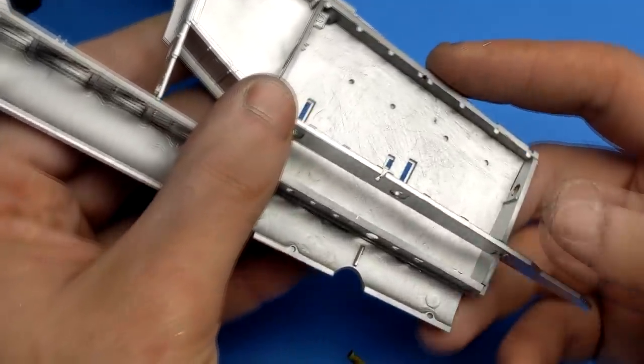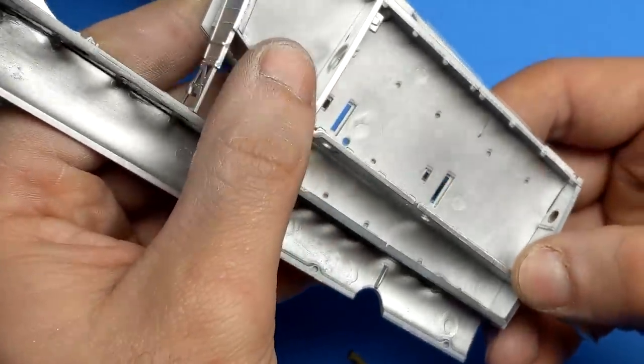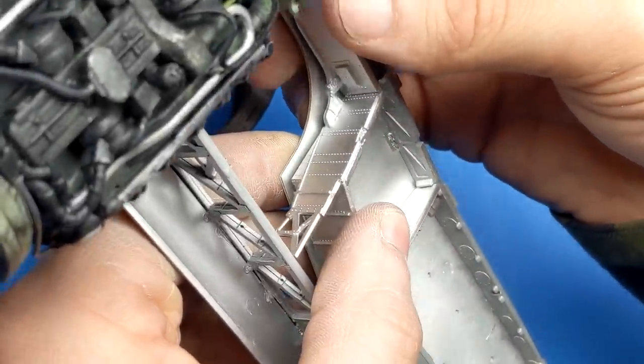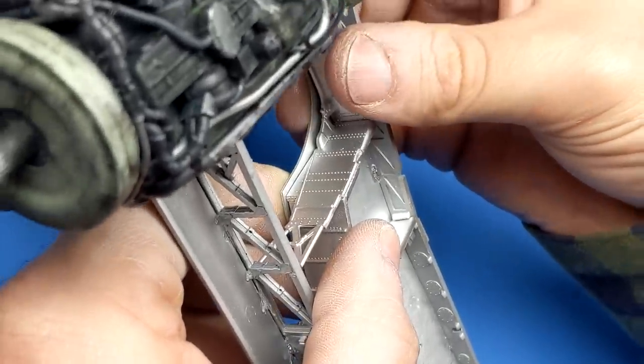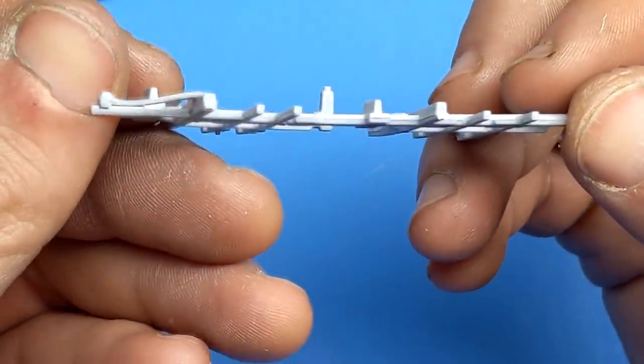Then once you have those wing spires in place there is a little bit of a sloppiness to the fit so you're gonna have to hold and glue to get things to tighten up before moving any further. If not you're not gonna be able to get the wing tops in place and then you're in for a world of trouble.